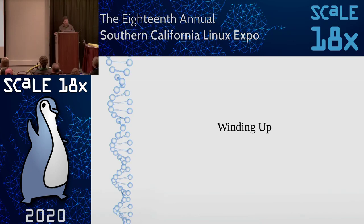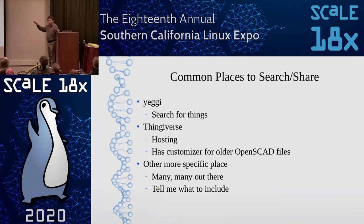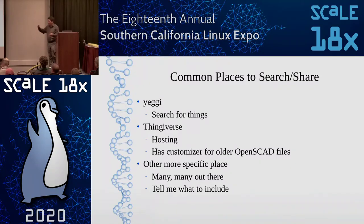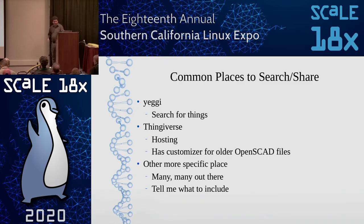A couple of useful resources: Yeggi—a 3D search engine that finds models. Thingiverse—where people share designs under mostly Creative Commons licenses that you can download, print, edit, and remix. They have a customizer so you can go on the website, flip parameters in the GUI, and get an STL ready to print—you don't even need to download the OpenSCAD file. It'll do it on their web server, though only for older versions. There may be more specific places depending on your use case.